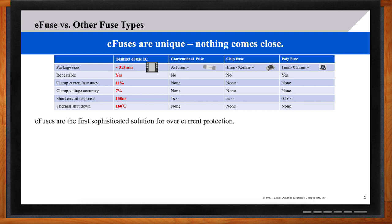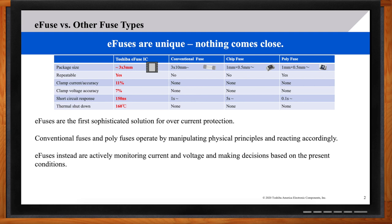E-fuses are the first sophisticated solution for overcurrent protection. Conventional fuses and poly fuses operate by manipulating physical principles and reacting accordingly. That means that if the filament blows, operation is ceased, the current conditions are met, the resistance goes up. So, it's very physical. Toshiba's e-fuse is much more elegant. It actively monitors current and voltage and makes decisions based on the present conditions. And fast response is important because a lot of circuit damage could happen during that one second it takes for a conventional fuse to blow.